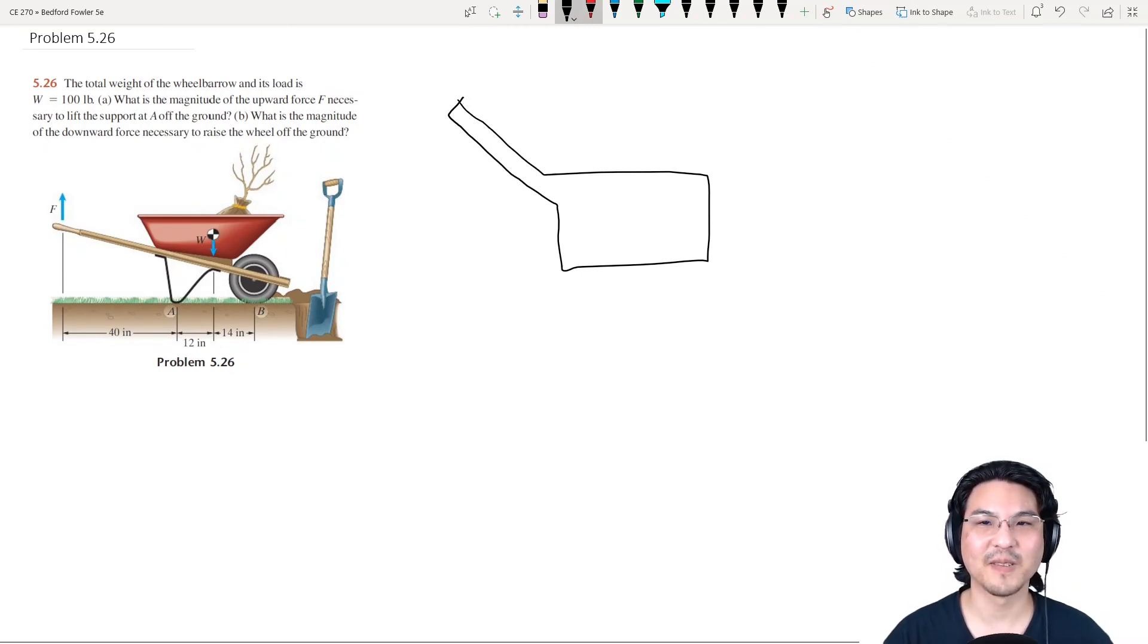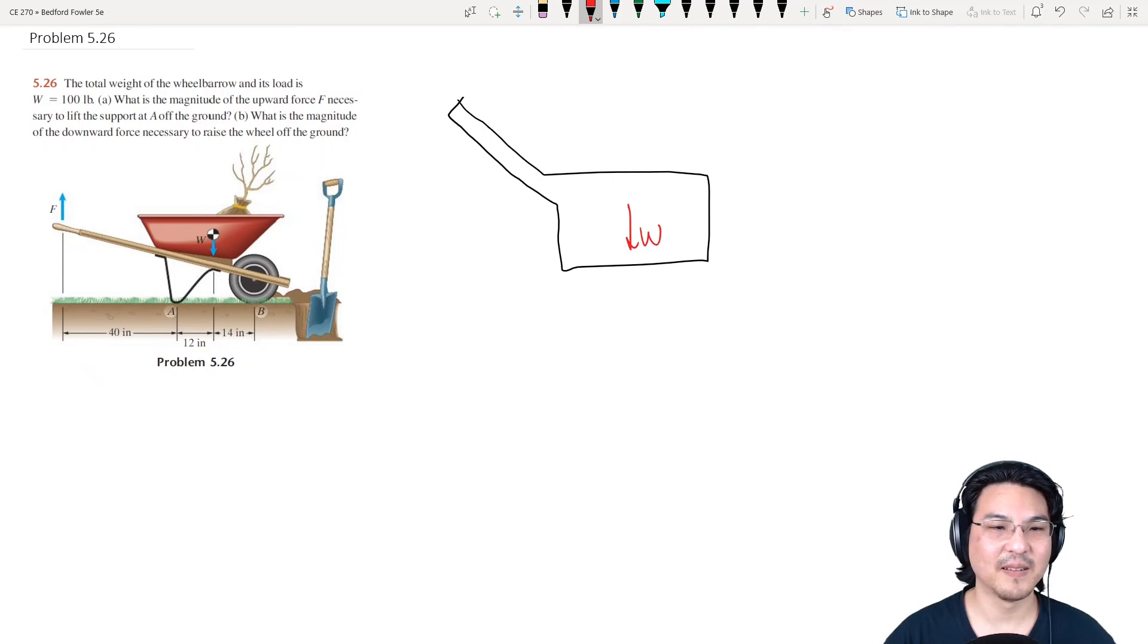There is a force here, the weight, and then it's touching the ground here and here, and then you apply a force. But then in part A, if you apply an upward force here so that the support at A is off the ground, so it's no longer touching the ground at A, so this is gone.